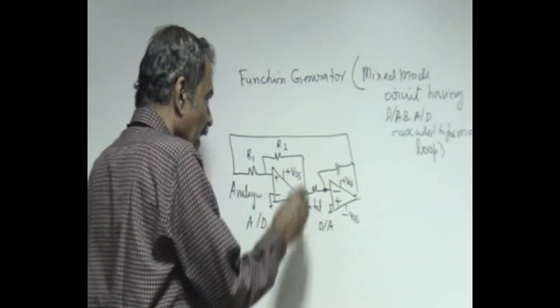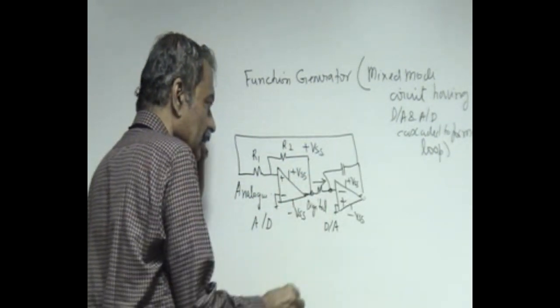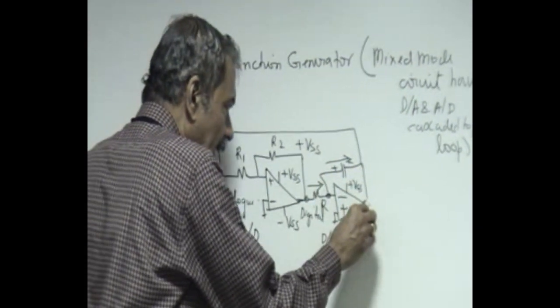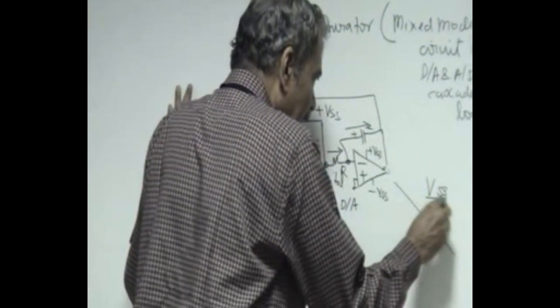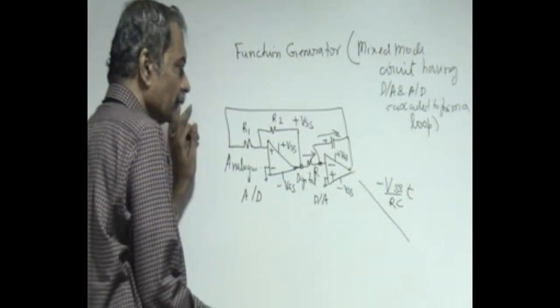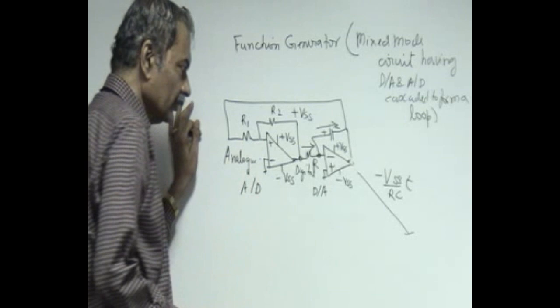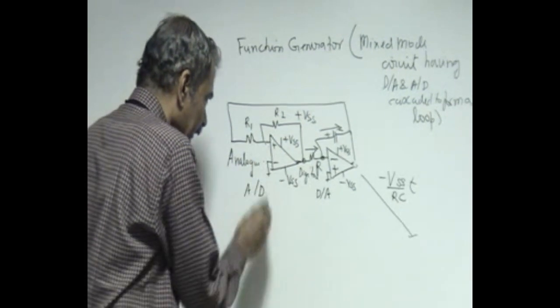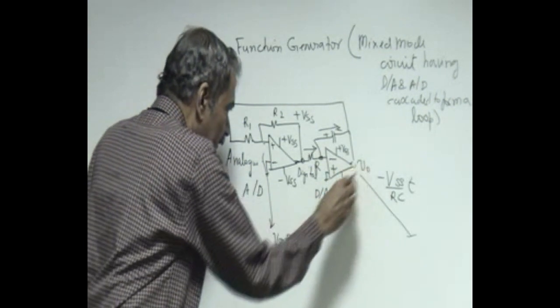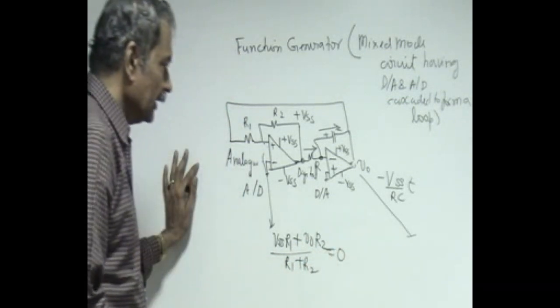How is it going to work? The output is assumed to be either at plus Vss or minus Vss. Let us take it as plus Vss, then the current in this is Vss by R, which is going to charge this capacitor this way. This will be going negative at a rate which is Vss by RC into T with a negative. As soon as it reaches a certain point here where this voltage goes to 0, it is already at plus Vss. This voltage at this point is nothing but Vss into R1 plus V naught into R2 by R1 plus R2. When this becomes equal to 0, the state changes.